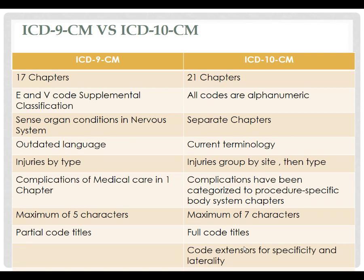ICD-9 had 17 chapters; ICD-10 has 21. There were E and V codes for supplemental classifications — E codes were related to falls and traumatic issues, V codes were related to therapy, wound care, and things like that. Those have gone by the wayside. Now all codes are alphanumeric, meaning they have a letter first and then numbers to follow. Before, sensory organ conditions and the nervous system were all one chapter; now they're separate. So an eye injury that used to fall under the nervous system chapter is now in a separate chapter under sensory organs.